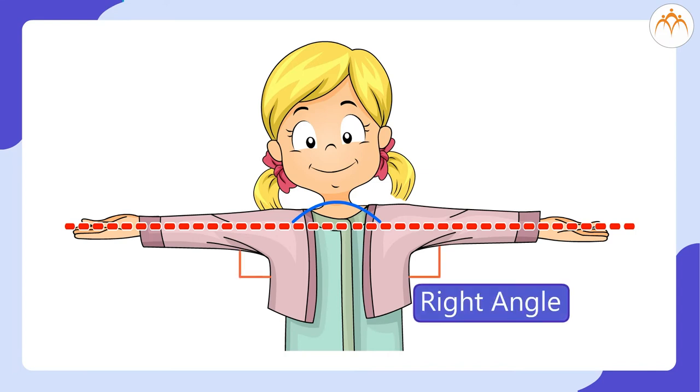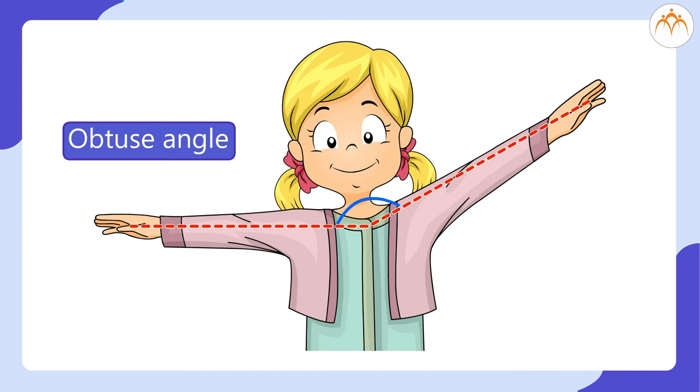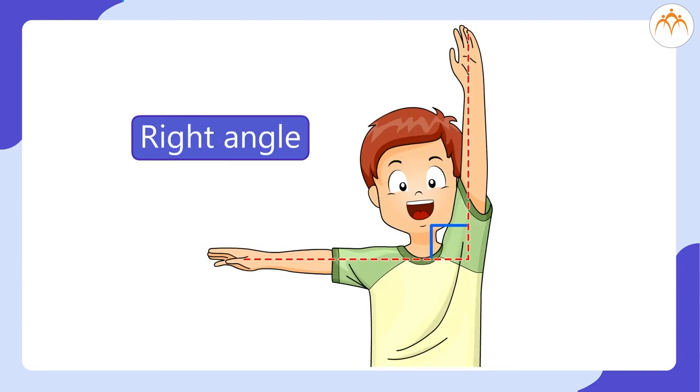There will be a right angle between your stretched hand and your body. Now bring your left hand up, turning at the shoulder. Your right hand remains parallel to the floor. The angle between the right hand and left hand is an obtuse angle. Now slowly take the left hand up. Now it touches your ear. The angle between the two hands is the right angle.